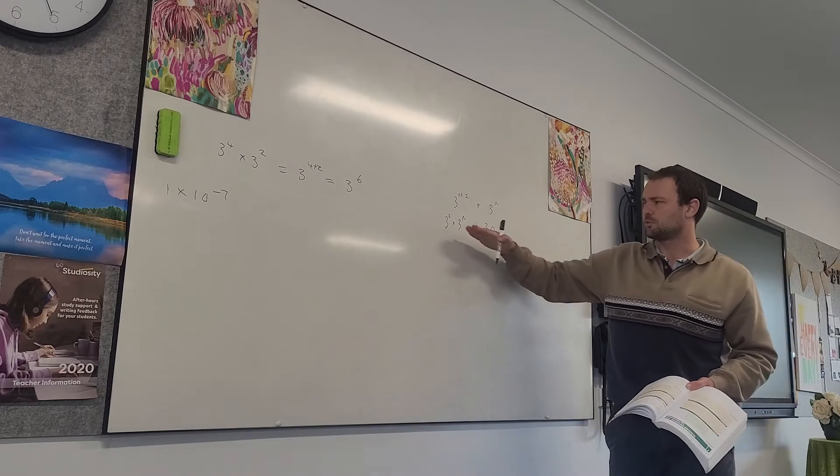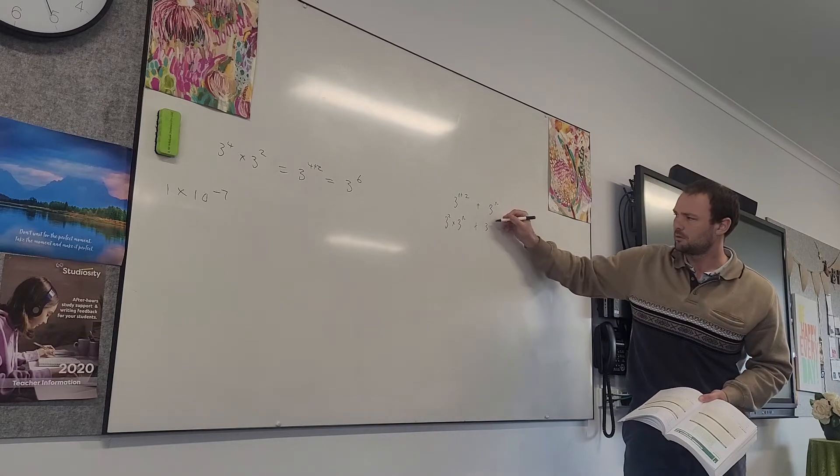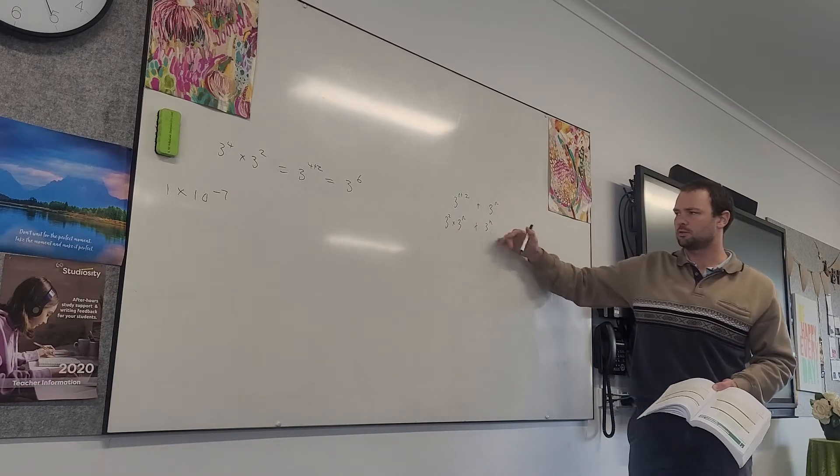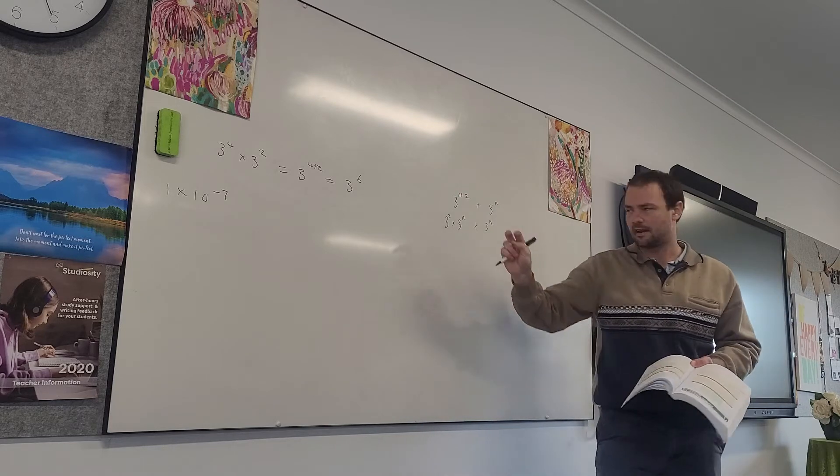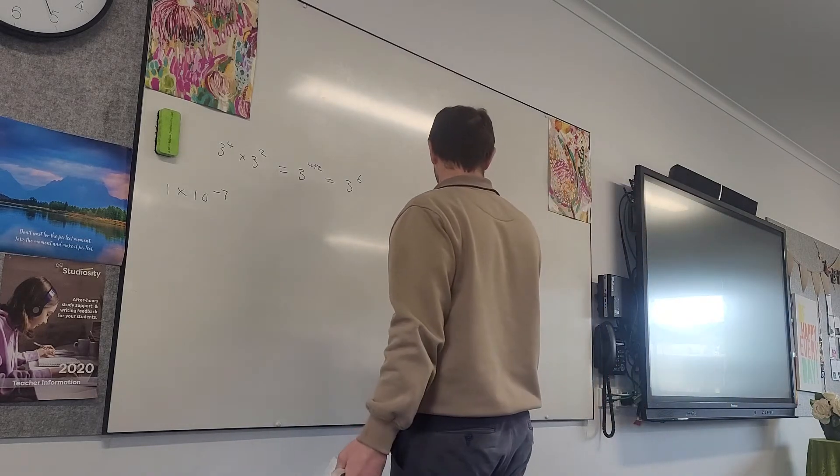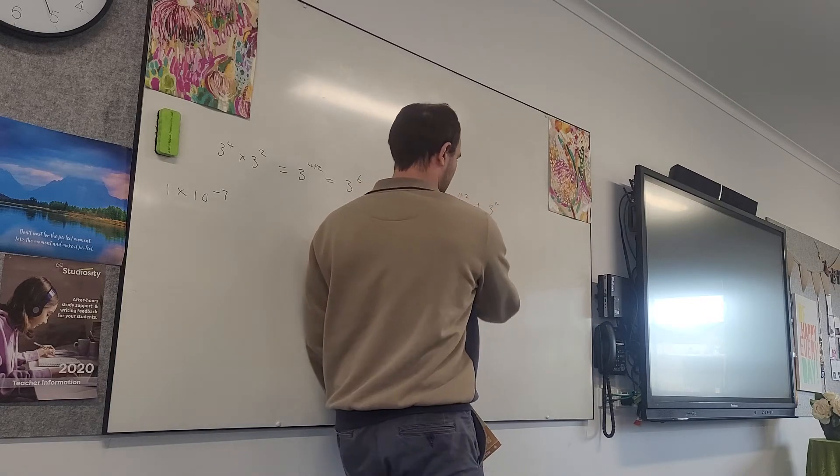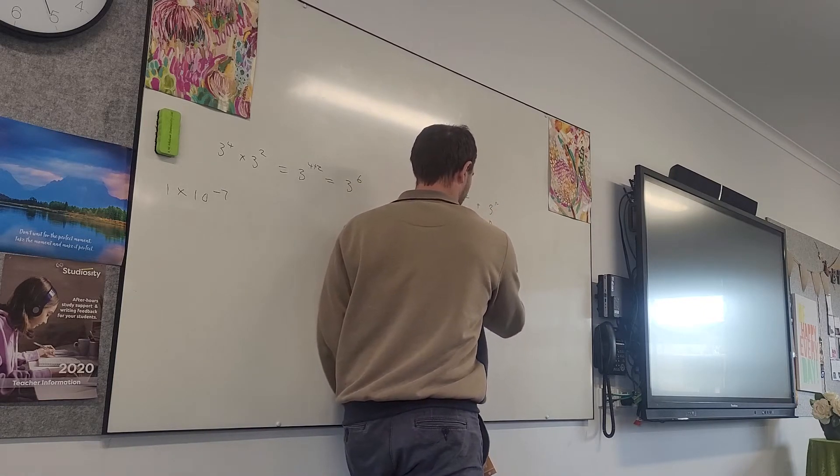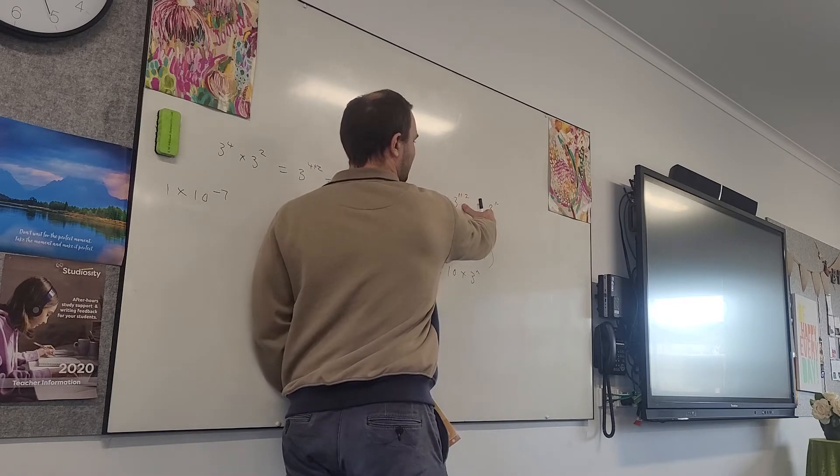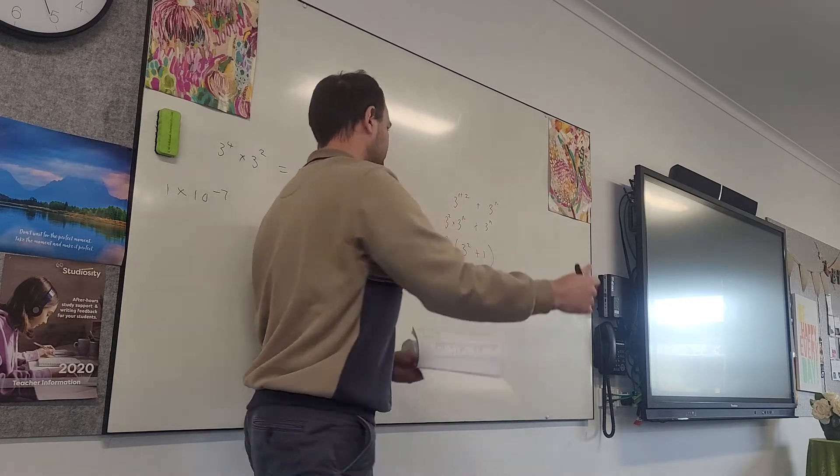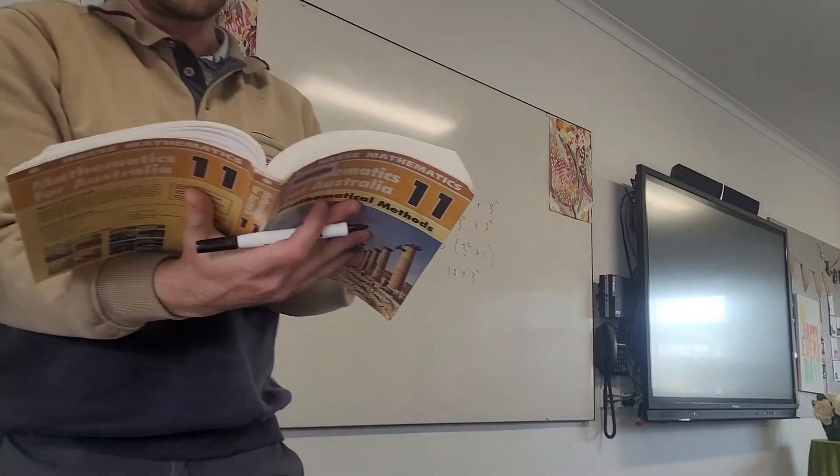And then we're looking at these two terms, and we're saying, excuse me, what is common between these two? 3 to the n, let's pull that out the front. And so you'd be left with 3 squared plus 1, which is 10. Because it has 9 upon its 10, so really you've got 10 lots of 3 to the n. That can be factorized in the path.